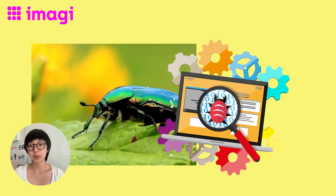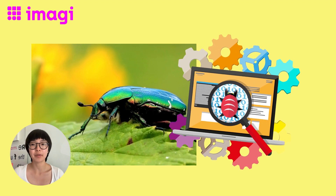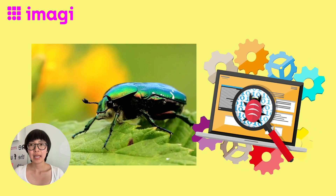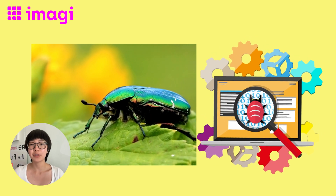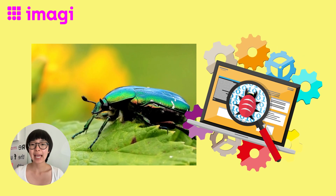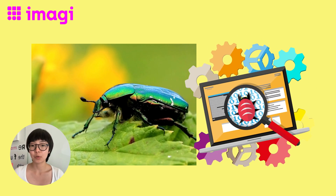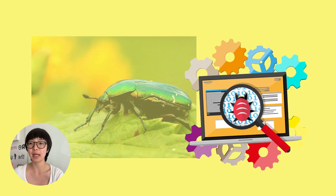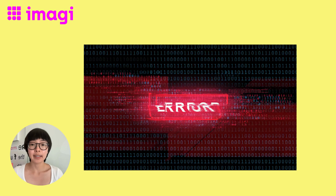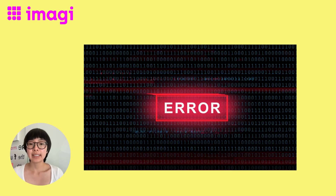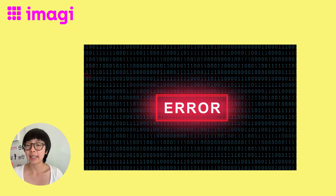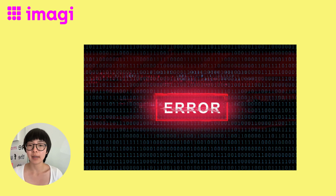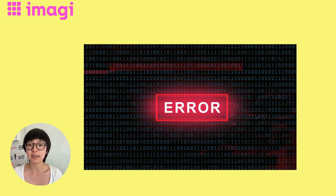Have you heard of a bug in your program? Not the type that crawls or flies — but it's a funny story how we got this term. Way back then, computers were as big as your classroom, and actual bugs could crawl inside and cause some serious trouble. That's how we started calling coding errors bugs. So when your code has a bug, your computer sends out an error message. But don't worry — this is just your computer's way of giving you a heads up about a problem. It's like a clue in a mystery game, guiding you to track down the error and fix it.